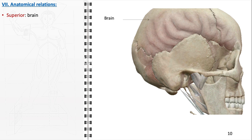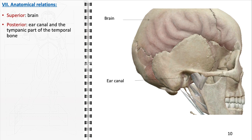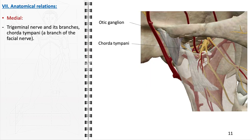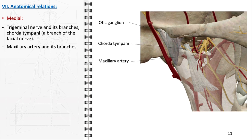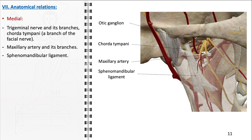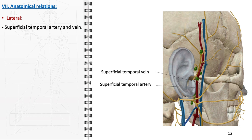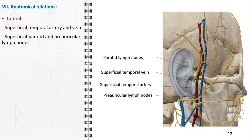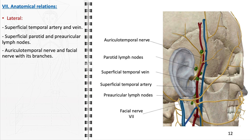The temporomandibular joint exhibits intricate anatomical relations with surrounding structures, encompassing nerves and blood vessels. Superiorly, the joint is in proximity to the brain, while posteriorly lies the ear canal and the tympanic part of the temporal bone. The medial anatomical relations involve the trigeminal nerve and its branches, the chorda tympani — a branch of the facial nerve — the maxillary artery and its branches, the sphenomandibular ligament, and the medial pterygoid muscle. Laterally, the joint relates to the superficial temporal artery and vein, the superficial parotid and preauricular lymph nodes, and the auriculotemporal nerve and facial nerve along with its branches.